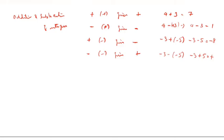So 5 minus 3 gives 2, and the answer is plus 2. Another method: minus 4 plus 3 — which is the greatest number, 4 or 3? 4 is the greatest number, so minus 4 plus 3 gives minus 1. Here, 6 minus 3: the positive is the greatest, so you write plus, and 6 minus 3 is 3.